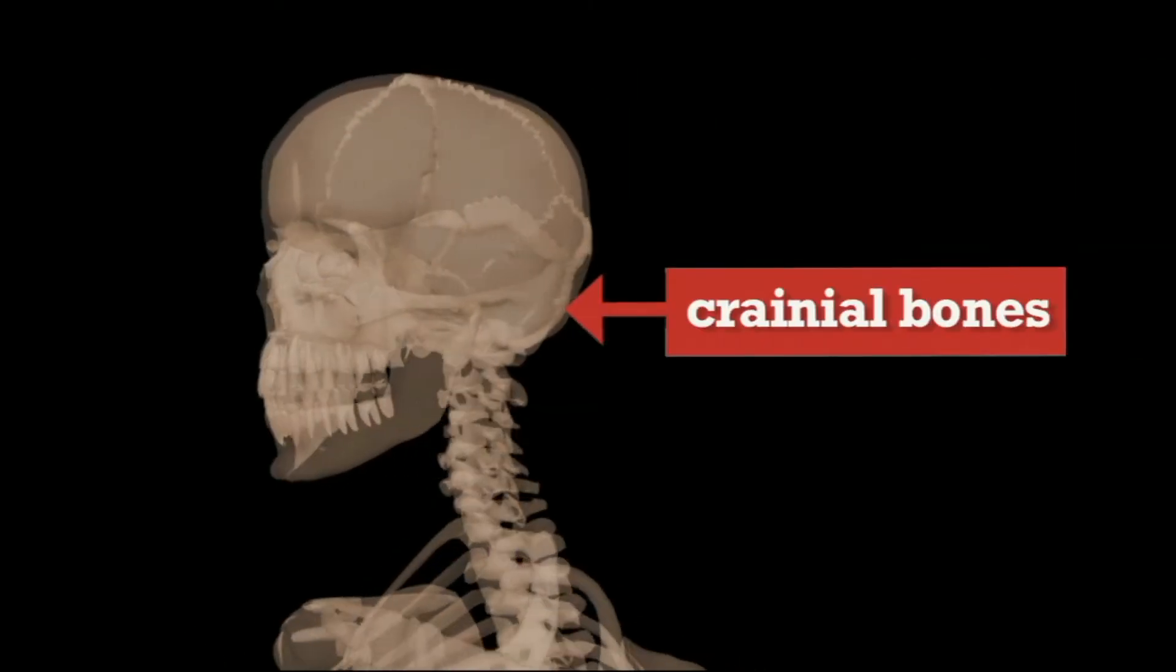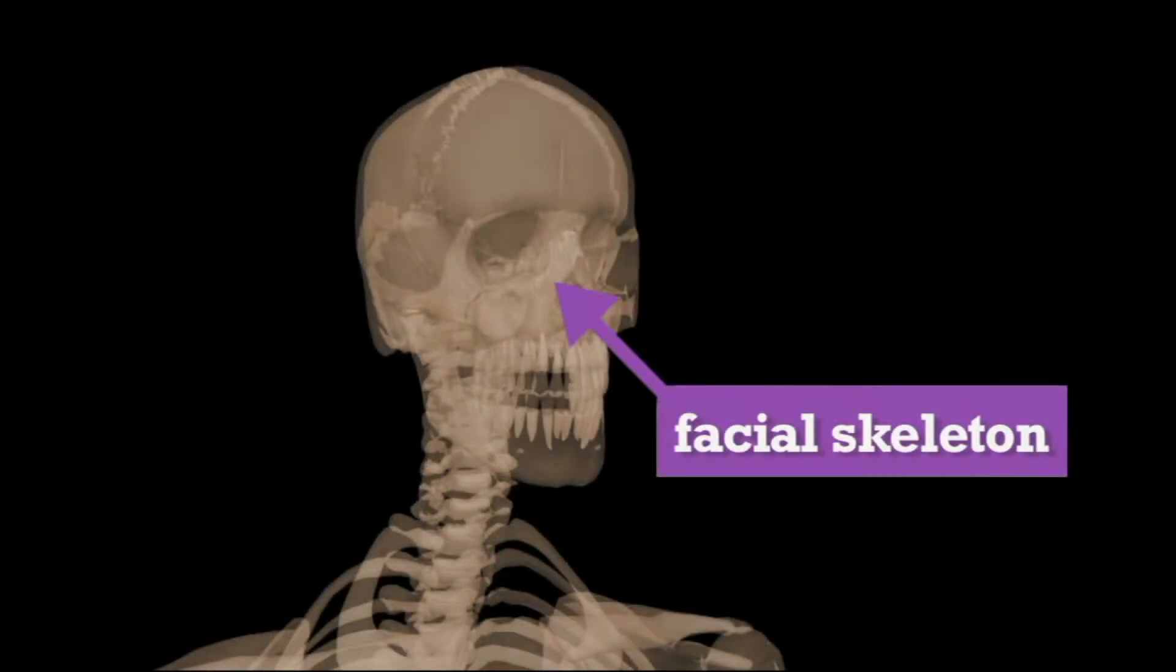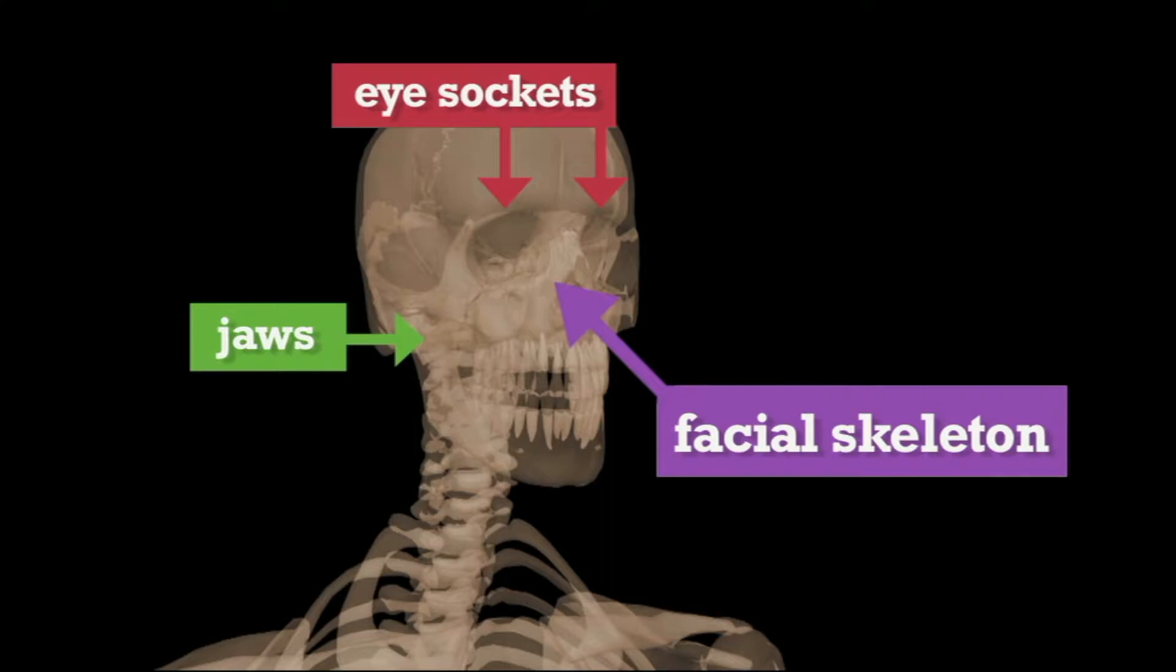The skull has eight cranial bones, fused so that they protect the brain. The facial skeleton has 14 bones that provide a framework for the eye sockets, jaws, and teeth.